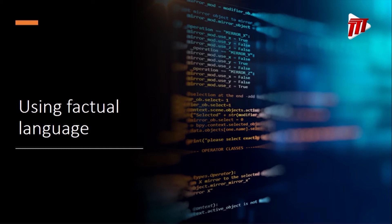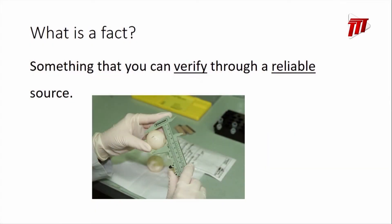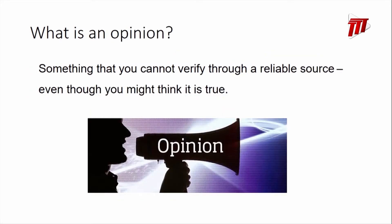Let's go deeper into using factual language. We need to understand: what is a fact? A fact is something that you can verify through a reliable source. To verify means to check, and reliable means trustworthy. So a fact is something that you can check using a trustworthy source. But what is an opinion? An opinion is something that you cannot verify through a reliable source, even though you think it might be true.